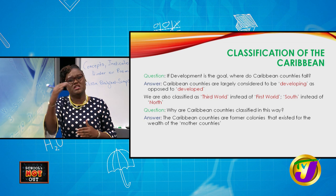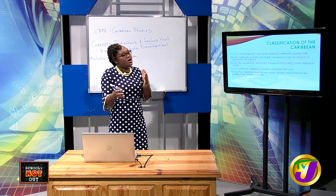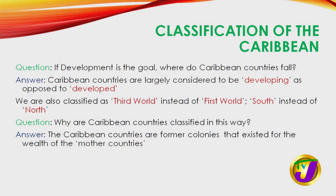How is the Caribbean classified in light of all these definitions of development? Caribbean countries are largely considered to be developing as against developed. Other terminology used includes South versus North, and Third World versus First World — and notice there is always a gap in between. Why are we classified this way? The answer stems from our history. Caribbean countries were or are former colonies of what we call mother countries, also known as the metropole.